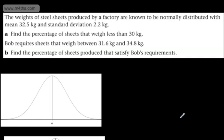In this video, we're going to do the second example of real-world applications of the normal distribution. We're told the weights of steel sheets produced by a factory are known to be normally distributed with a mean of 32.5 kilograms and standard deviation of 2.2 kilograms. In part a, we need to find the percentage of sheets that weigh less than 30 kilograms. So let's write this out.